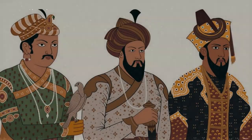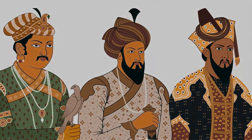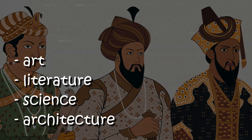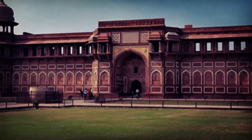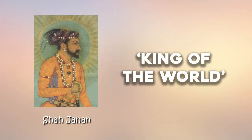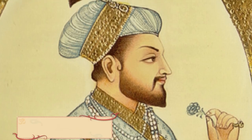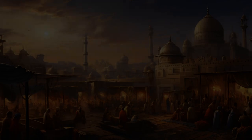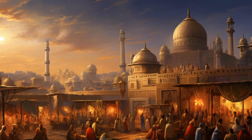The Mughals accomplished many great feats, and one of them was their massive contribution to the field of art, literature, science, and architecture. These contributions to architecture peaked in the era of the fifth Mughal Emperor, Shah Jahan, which translates to King of the World. He reigned from 1628 to 1658, and it was under his emperorship that the Mughal Empire reached the height of its architectural achievements and cultural glory.